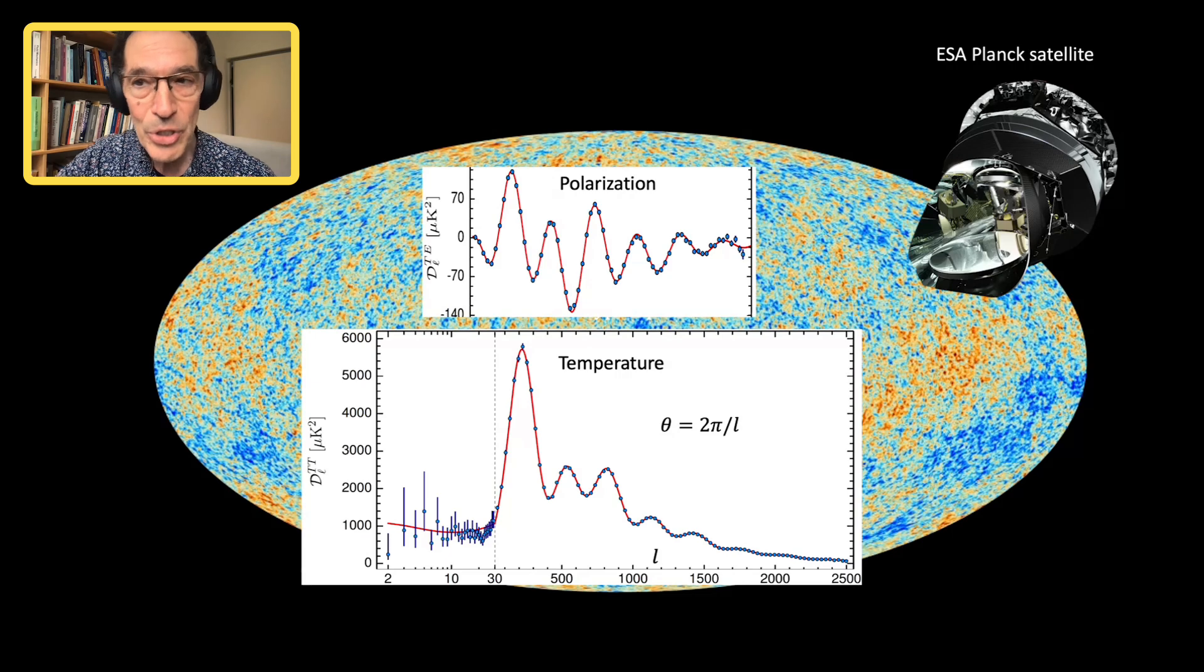And I persuaded the experimentalists on the Planck satellite to include detectors to measure the polarization. You see, the numbers are tiny. And if you look at the units in the top curve, it's micro-Kelvin squared. So they had to measure the polarization with an accuracy of a few micro-Kelvin, two or three micro-Kelvin. That's a very big task.